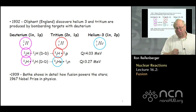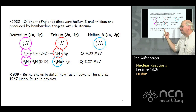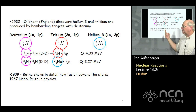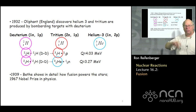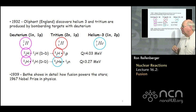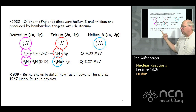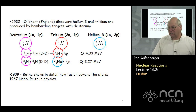In 1939, Bethe in the US showed in detail how fusion powers the stars, working out the fusion nuclear reactions required to understand why a star shines and releases such tremendous amounts of energy. For his work explaining fusion, he received the 1967 Nobel Prize.